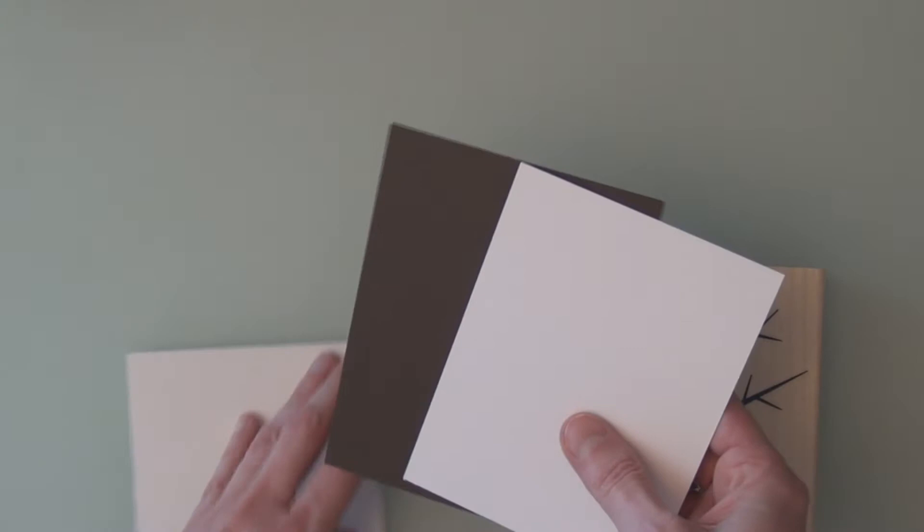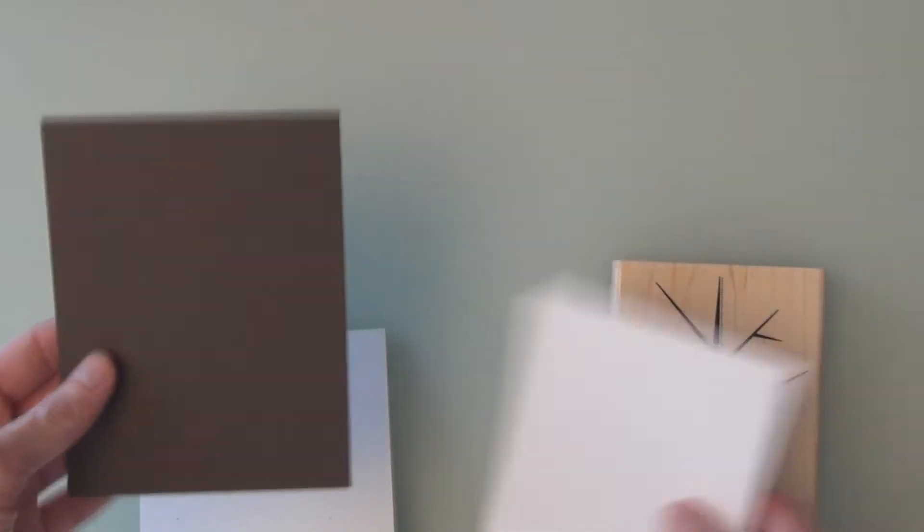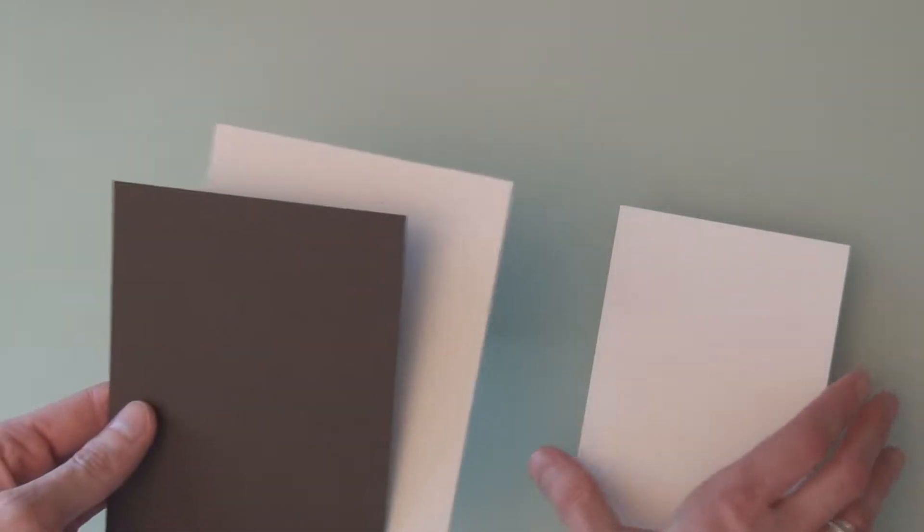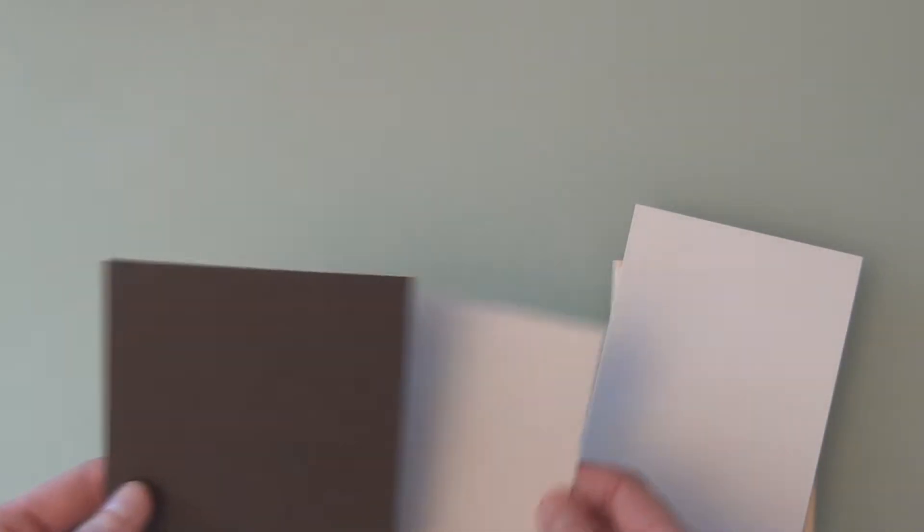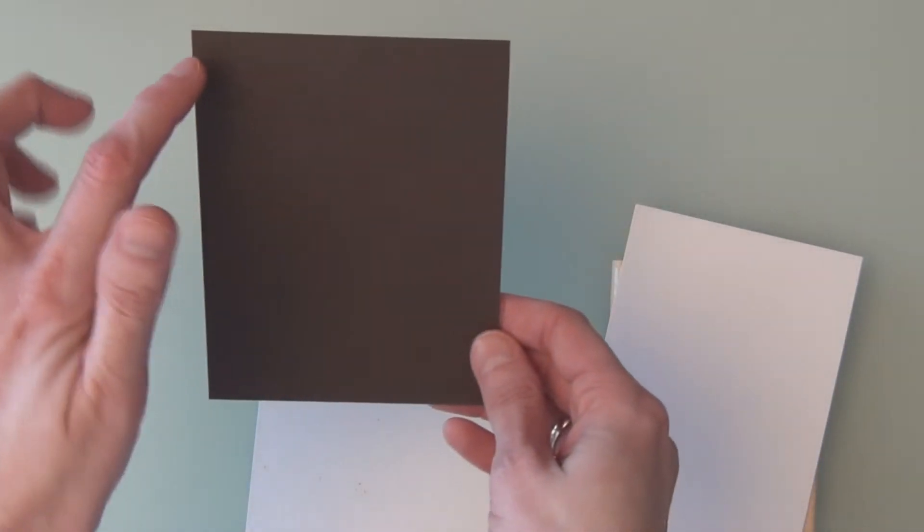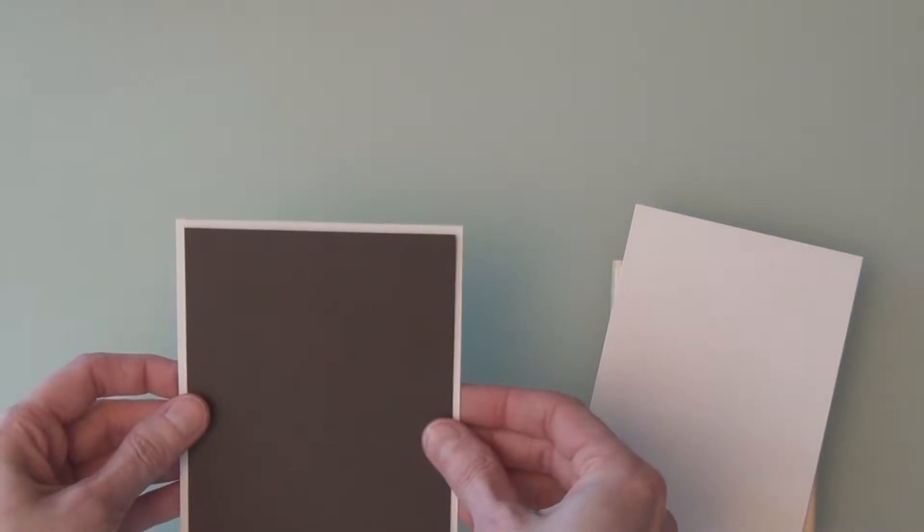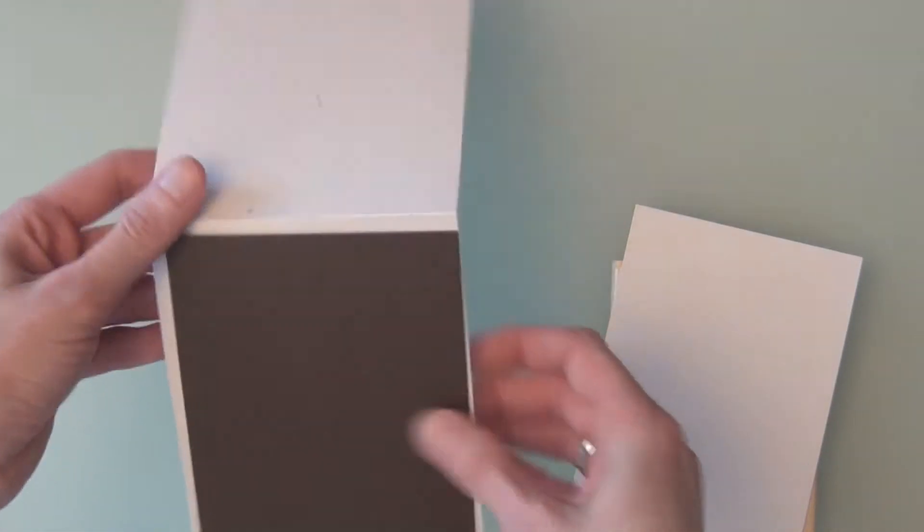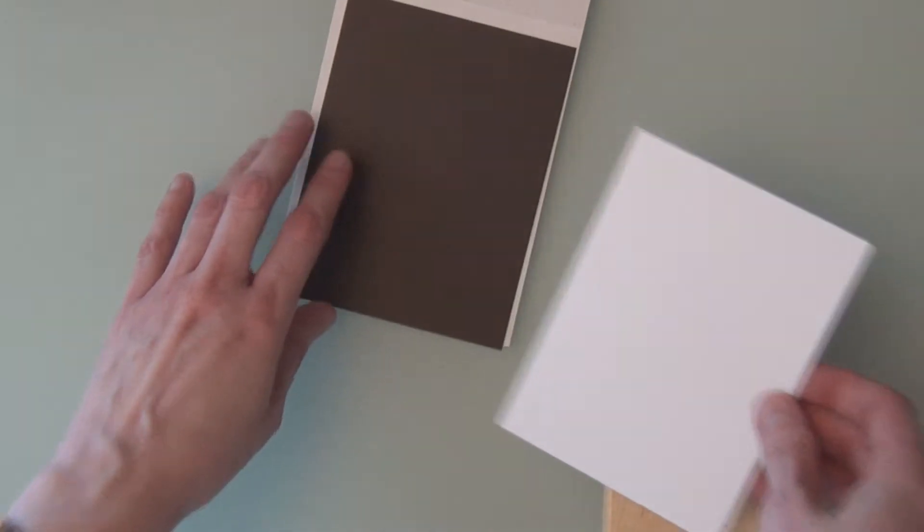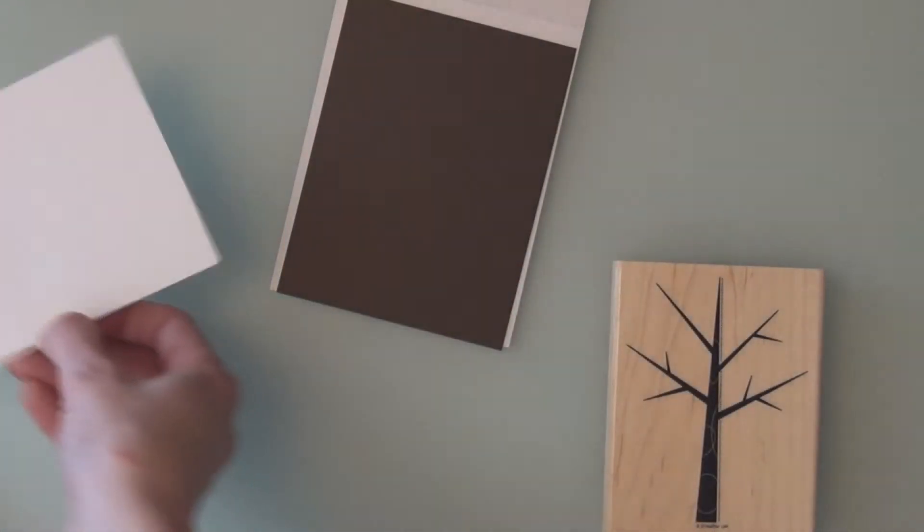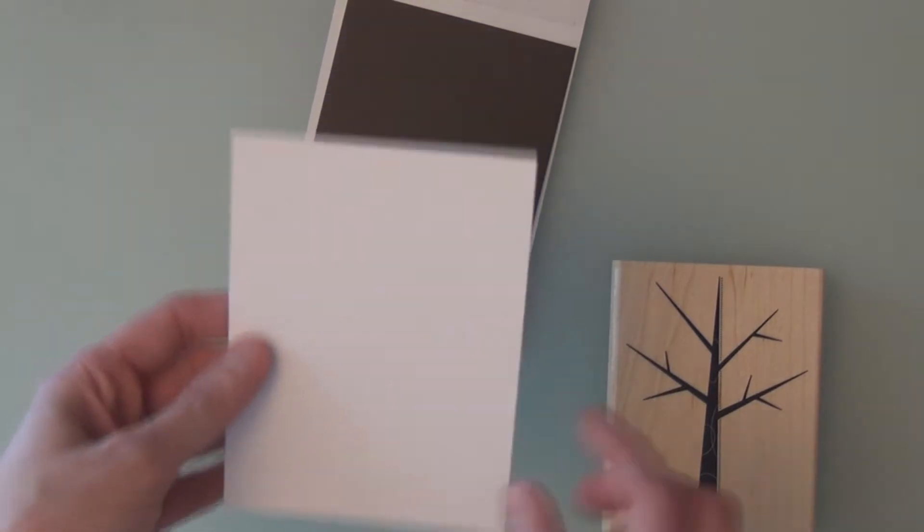This is a 5 1⁄2 by 4 1⁄4. I've done a top folding card. I'm going to layer it on Early Espresso. These are all Stampin' Up products that I'm going to use today. This is cut to 5 1⁄4 by 4. I had to check my measurements, and that will be layered on here. And then I have cut down a Whisper White. It is 5 by about 3 3⁄4.